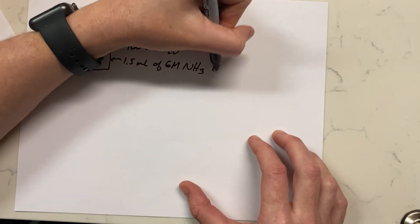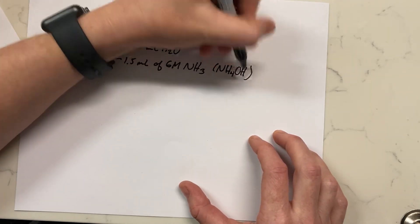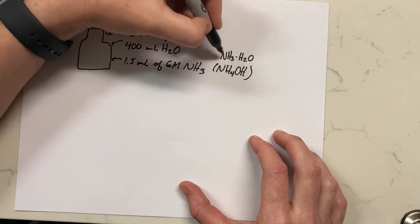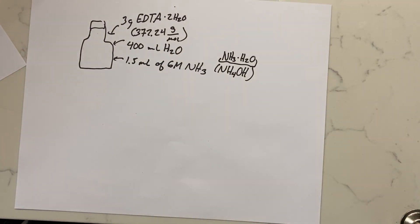Essentially, if you took NH3 and water, you would get ammonium hydroxide when stuff ionizes.